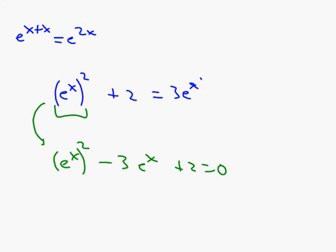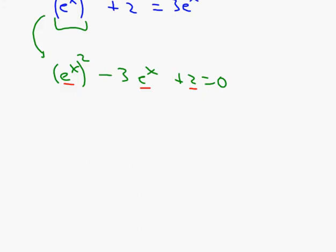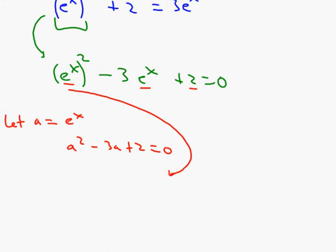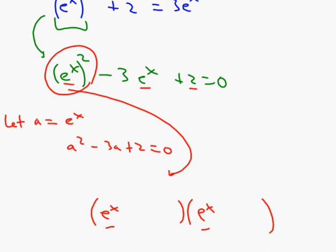This is also in quadratic form: you have a variable, (e to the x) squared, minus 3 times that same variable, plus a number equals 0. You can substitute a equals e to the x and get a squared minus 3a plus 2 equals 0, or factor directly with e to the x in each factor position. What numbers multiply to 2 and add to negative 3? Minus 2 and minus 1 do that, giving (e to the x minus 2)(e to the x minus 1) equals 0.